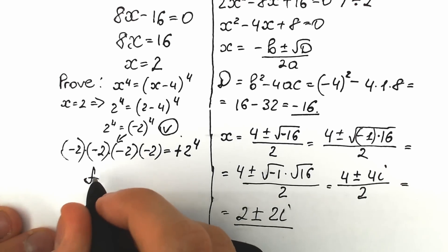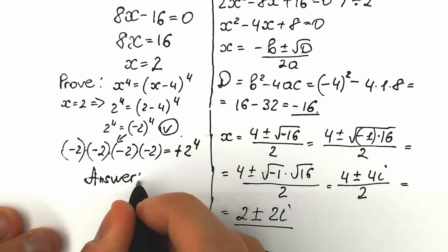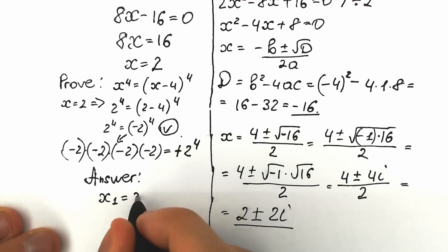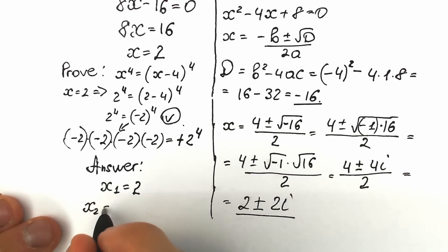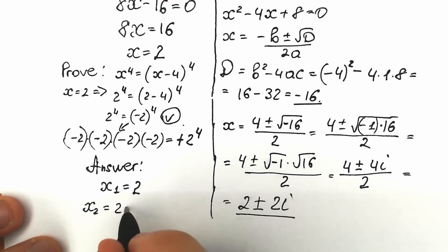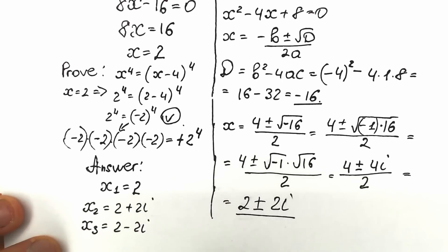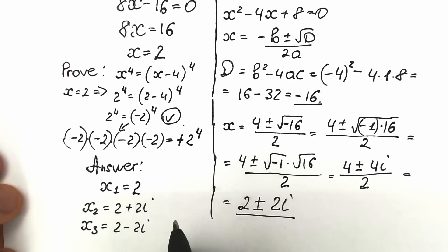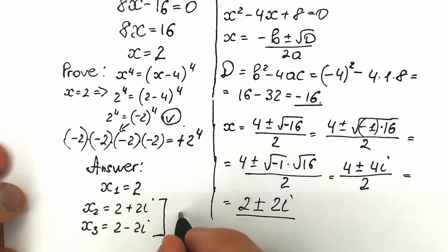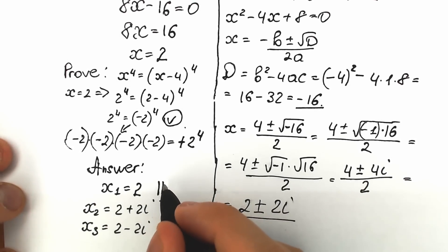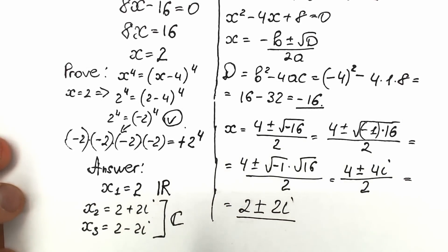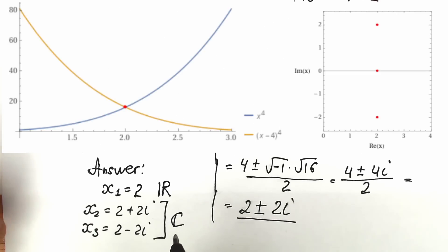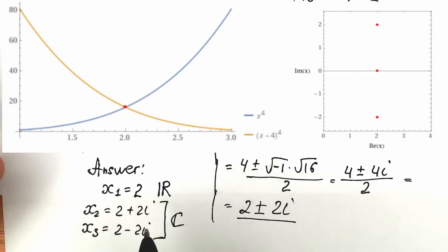Let's write our final answer. x₁ equals 2, x₂ equals 2 plus 2i, and x₃ equals 2 minus 2i. These are three roots: two complex solutions and one real root. You can also see these plotted on both the real plane and the complex plane.